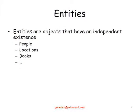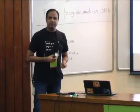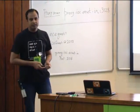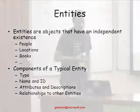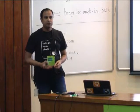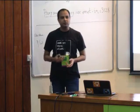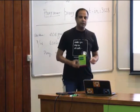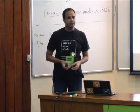Entities are essentially everywhere. Entities are objects that have an independent existence, like people, locations, books, and so on. They are represented typically by a name and an ID. In any knowledge base — which is basically a collection of entities — you represent them using some ID. For example, Microsoft Satori has a particular ID, Google's Knowledge Graph has a particular ID, Freebase has a particular ID, and so on.